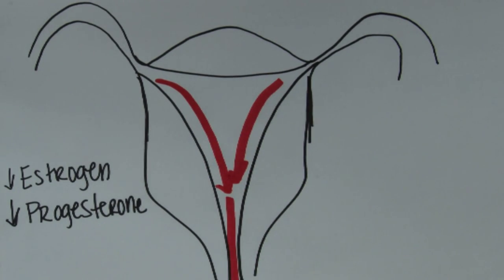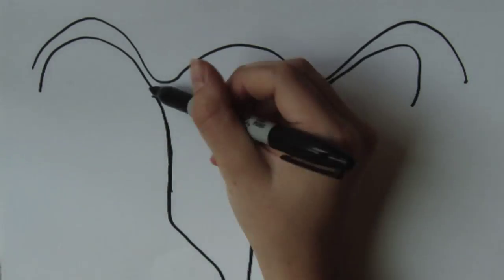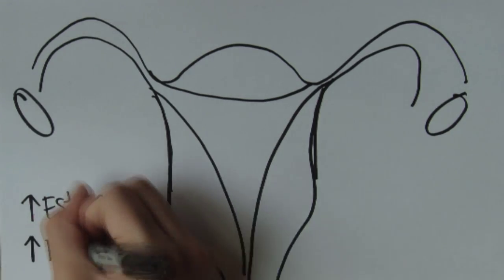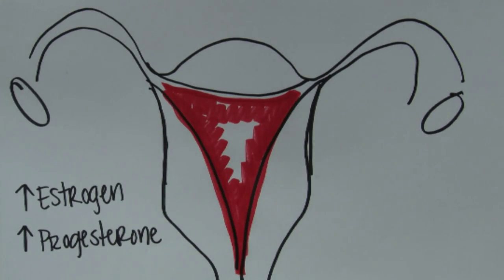The cycle will then start all over with FSH. If fertilization does happen, however, the corpus luteum will continue to secrete progesterone, preventing menstruation. Thereafter, lots of different changes begin to happen as the embryo starts to develop.